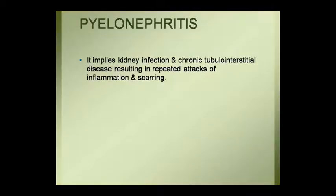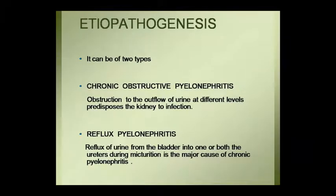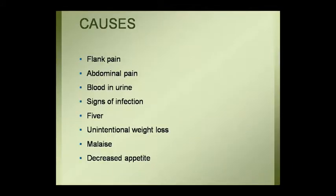Chronic pyelonephritis is a chronic tubular interstitial disease caused by inflammation, scarring, and repeated attacks of infection. In etiopathogenesis, two types are recognized: chronic obstructive pyelonephritis, due to urinary tract obstruction at various levels, and reflux pyelonephritis, where urine refluxes from the bladder into one or both ureters during urination. Reflux pyelonephritis is the biggest cause of chronic pyelonephritis.